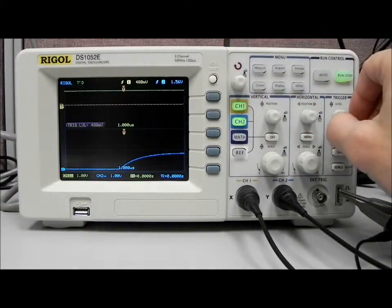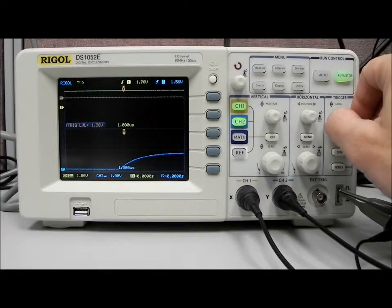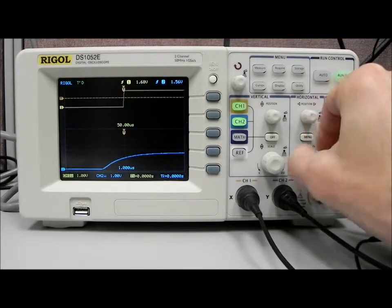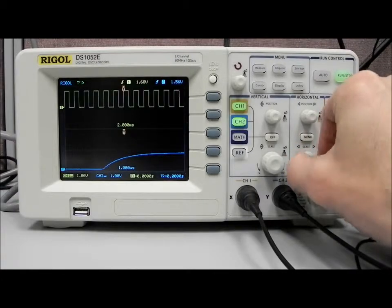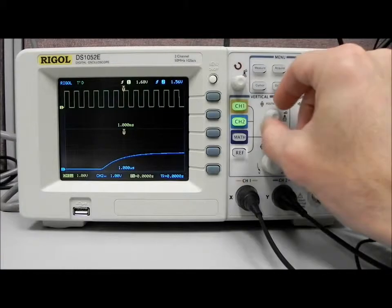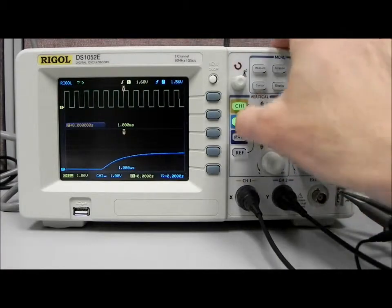Go to channel one, we can set a different trigger level, and we can also set a different scale. So we can bring in channel one. Again, it shows the different time scale and then the different triggering areas, and we can do the same to channel two.